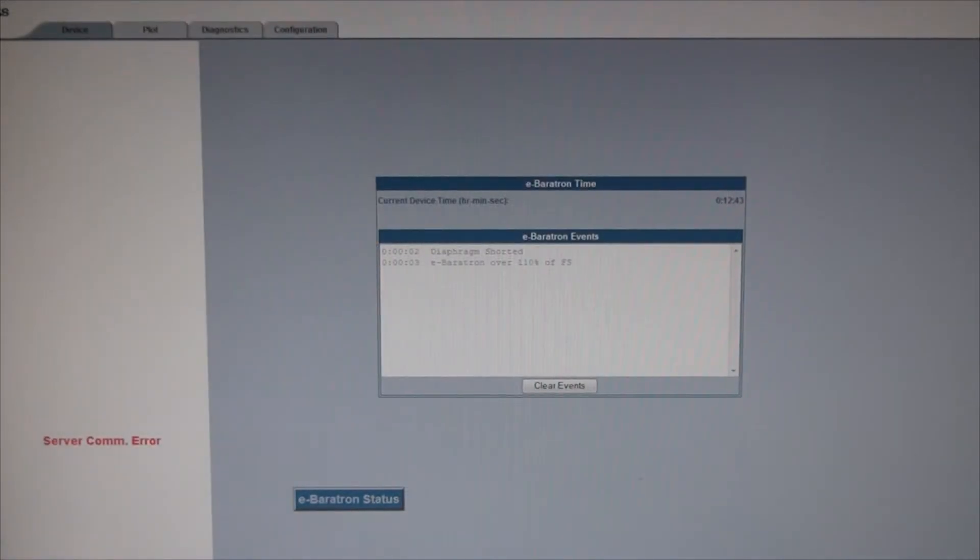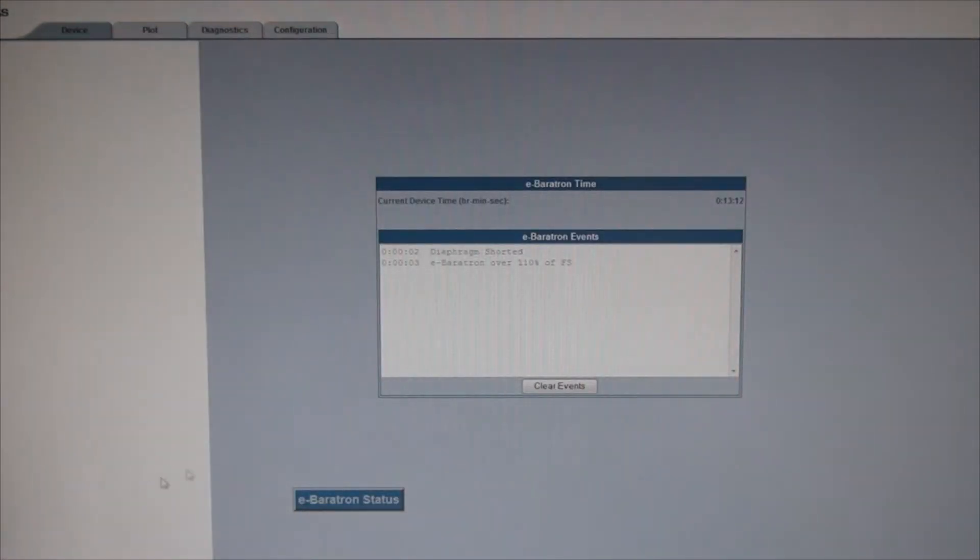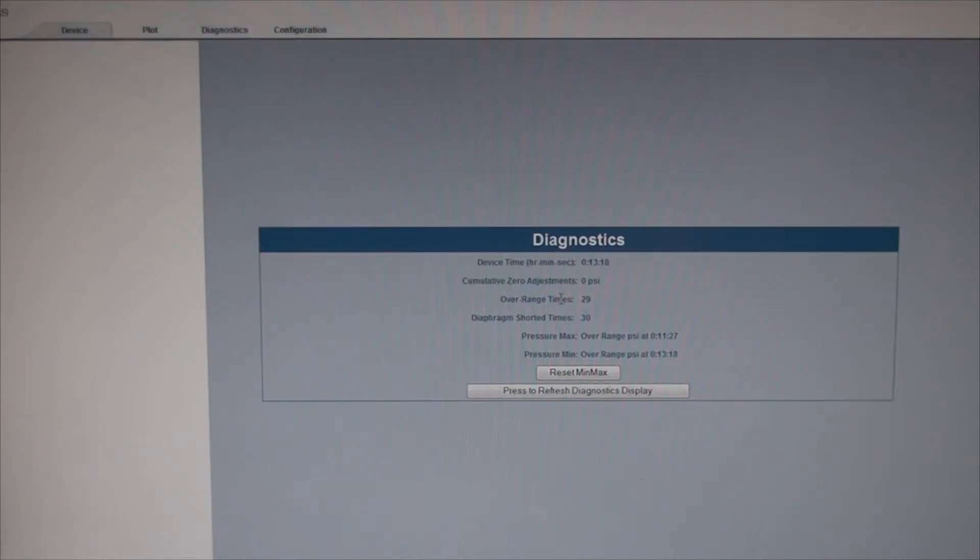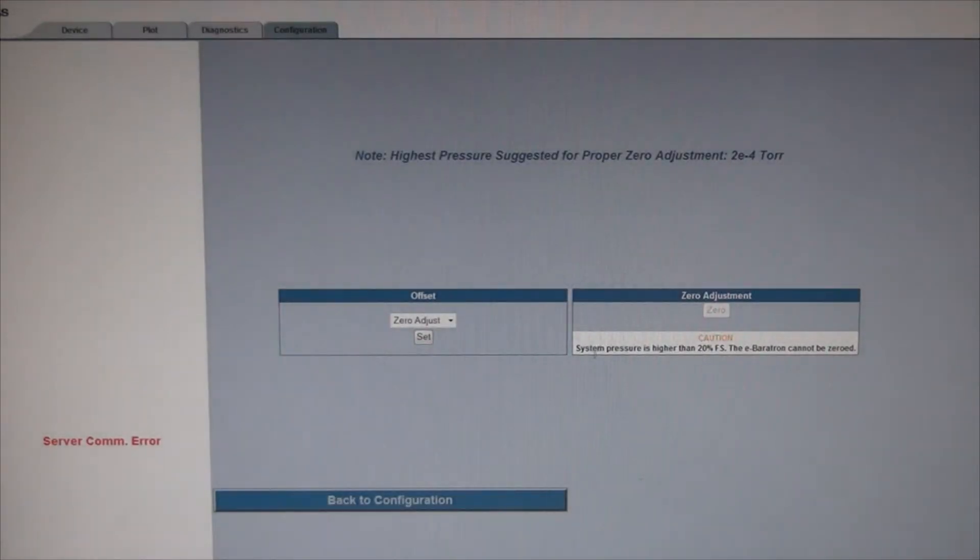After poking around, I've had a look and for some reason either I'm not running Java correctly on my computer or something, but it says here the diaphragm is shorted. If I try to clear the events it's still giving me the same thing. It also says COM error here, server COM error. If we go to diagnostics, it says overrange times 29, diaphragm shorter times 30. If I go to configuration and zero adjustment, it tells me caution system pressure is higher than 20% FPS. The barotron cannot be zeroed.